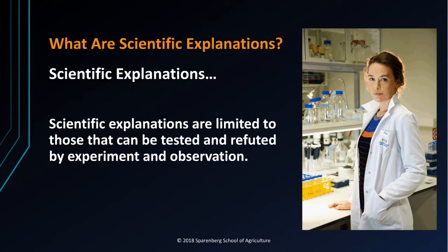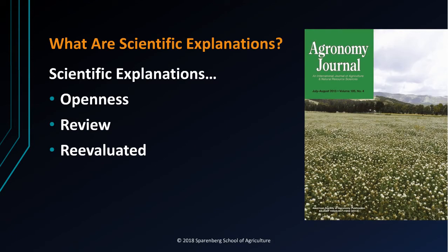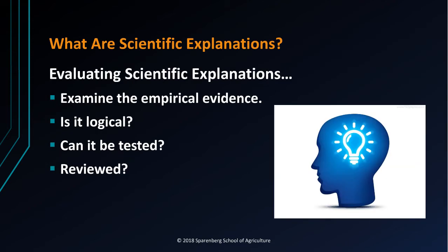Scientists consider empirical evidence, logic, additional observations, and test results when they create an explanation and decide whether they think it is valid. One thing that sets science apart from other areas of study is its need for openness and review. Scientific ideas must be testable and reproducible. When new information emerges, scientific explanations are re-evaluated and possibly modified. How do we evaluate a scientific explanation?